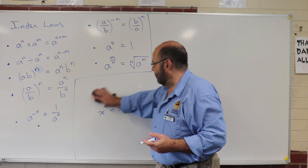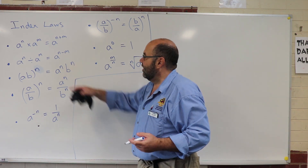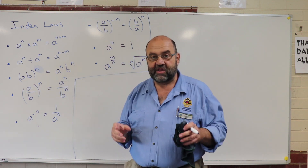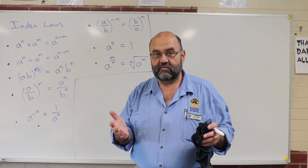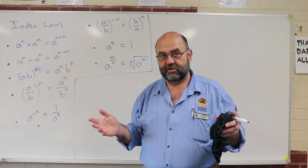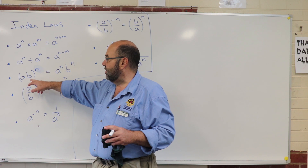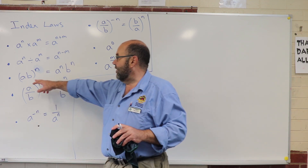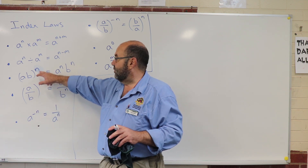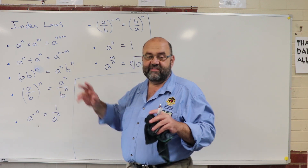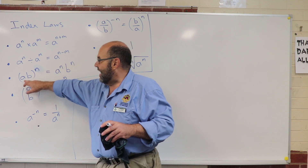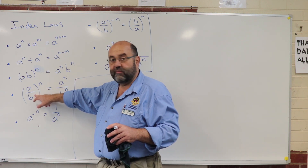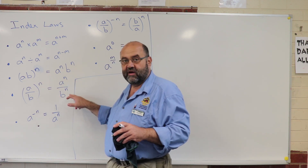What about the next one? It tells us what happens when we're working with brackets, so long as what's in the bracket is a product or a quotient. Product means multiplying things; quotient means dividing things — so not addition and subtraction, only multiplication or division. If what's in the brackets is a multiplication or a division and there's a power outside the bracket, that power gets distributed to both of the bases. So (ab) to the power of n: a gets the power of n, and b gets the power of n. Likewise, (a divided by b) to the power of n: a gets the power of n, and b gets the power of n.